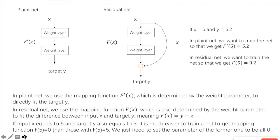In a plain network, we train the network so that it gives us a mapping function f, mapping input x to directly fit the target y. But in ResNet, because of the existence of the shortcut, mapping function f is no longer used to fit the target y directly. Instead, we train it to fit the difference between target y and the input x, which is also called the residual. As a result, ResNet also works in forward propagation, but training becomes much easier. For example, assume input x equals 5 and target y is also 5. It is much easier to train the net to get a mapping f(5) = 0 than f(5) = 5, because we can simply set all parameters to 0.